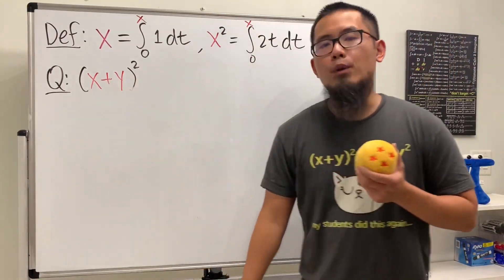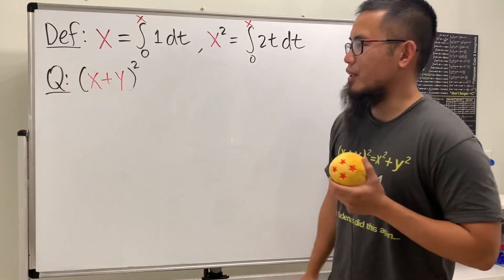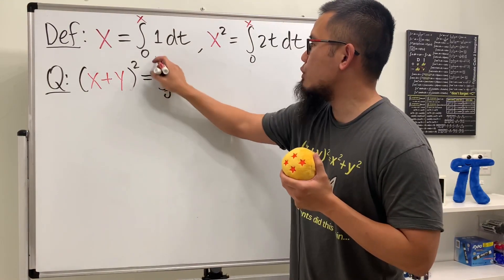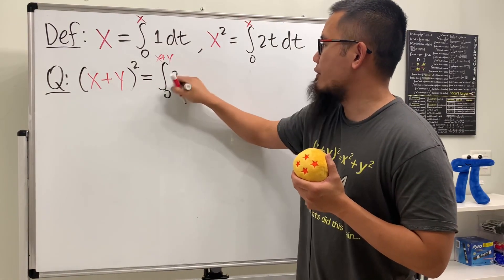We are going to expand x plus y squared, but with integrals. Check this out. First, we'll use this definition because we're at the second part right here. So this right here is equal to the integral going from 0 to that, which is x plus y. And then here we have 2t dt.